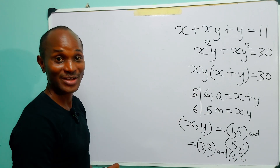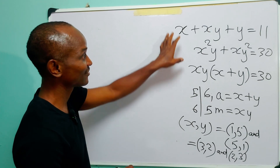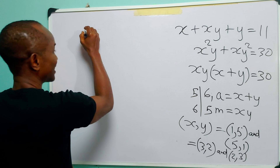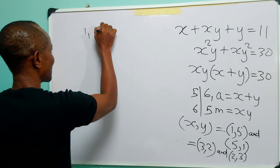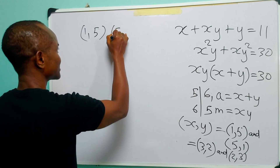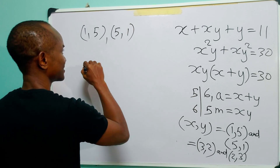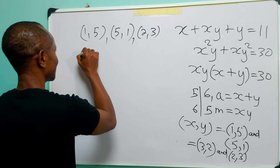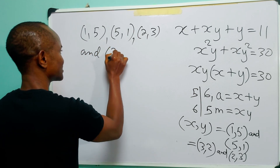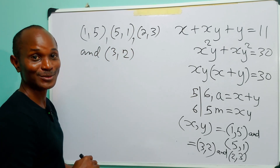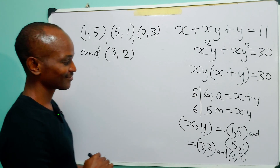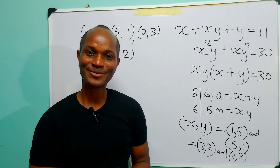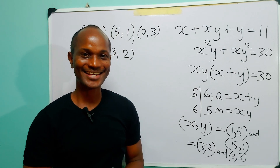So now we have all the values of x and y that satisfy these equations simultaneously: when x equals 1, y equals 5; when x equals 5, y equals 1; when x equals 2, y equals 3; and when x equals 3, y equals 2. With that we come to the end of today's exercise. I hope you've learned something, I hope you were entertained — see you in the next one.